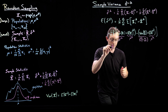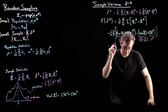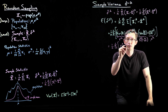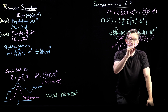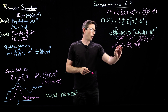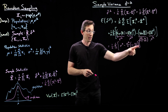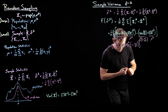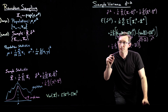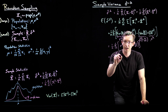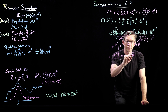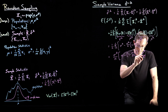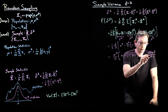Now plugging everything in: 1 over n times the sum from i equals 1 to n. The mu squared terms cancel, leaving sigma squared minus sigma squared over n times (1 minus (little n minus 1) over (big N minus 1)). Since there's no index remaining, every term is identical, so the sum over n just gives n times that expression, canceling the 1/n. This simplifies to sigma squared times a correction factor.